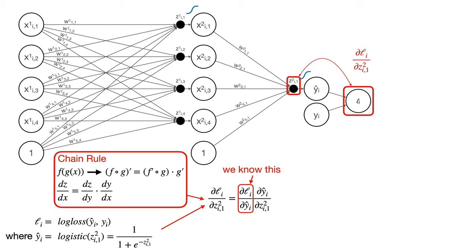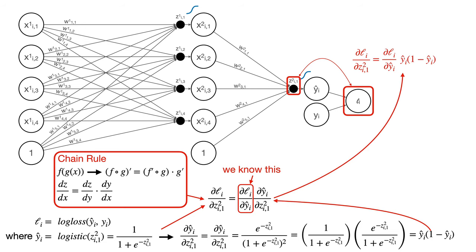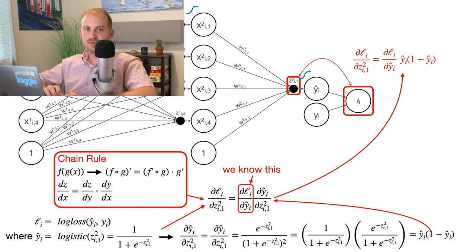Recall, y hat i equals 1 divided by 1 plus e to the negative z2 i1. Again, with some high school math, we can figure out that the derivative resolves to this. Going a bit further, it turns out that this equals y hat i times 1 minus y hat i. This definition is super useful. Why? The thing in the back of our heads is computational complexity. If these derivatives are hard to compute, gradient descent could take a really, really long time. Now, y hat is kind of hard to compute, but we have to compute y hat during the forward pass. So, as long as we cache those values, meaning we don't delete them, we can reuse them during gradient descent.